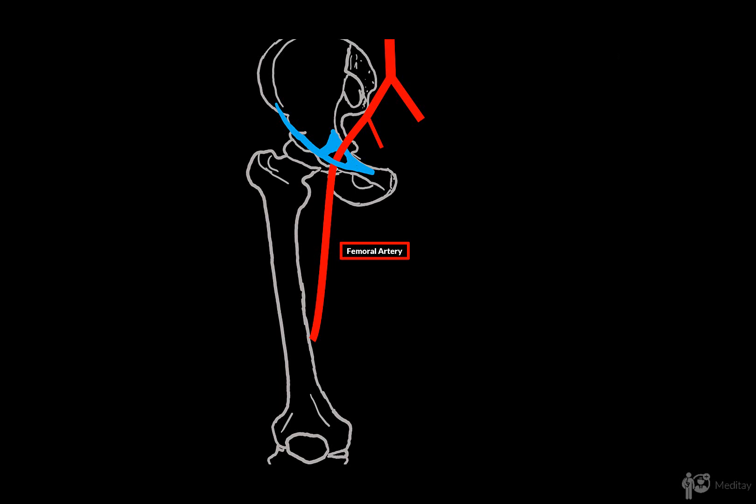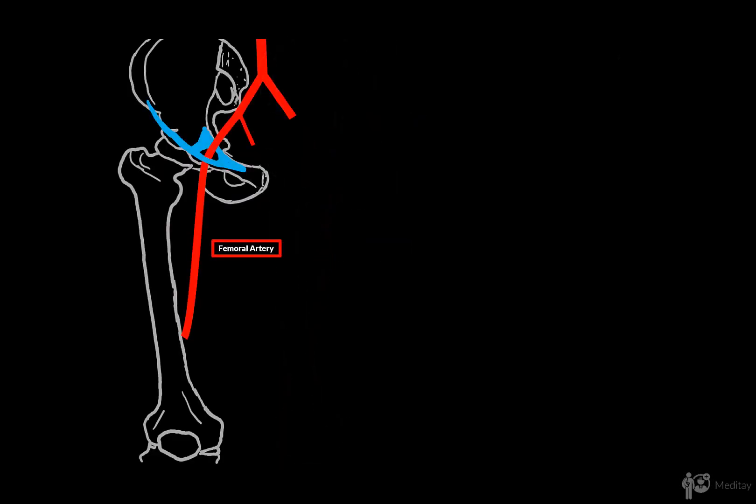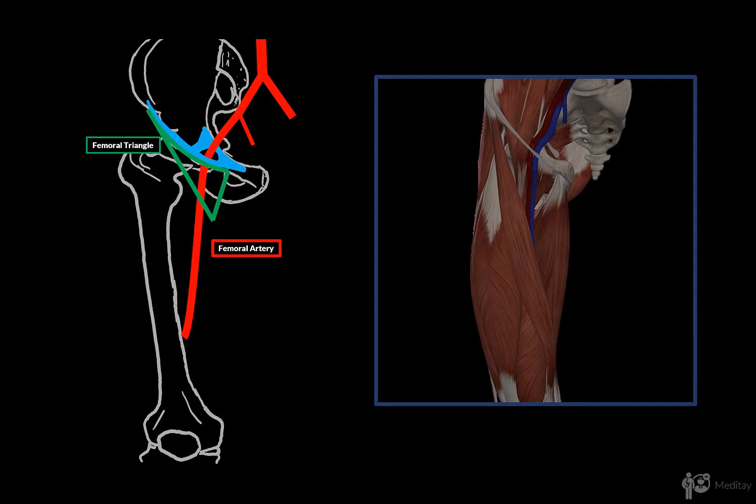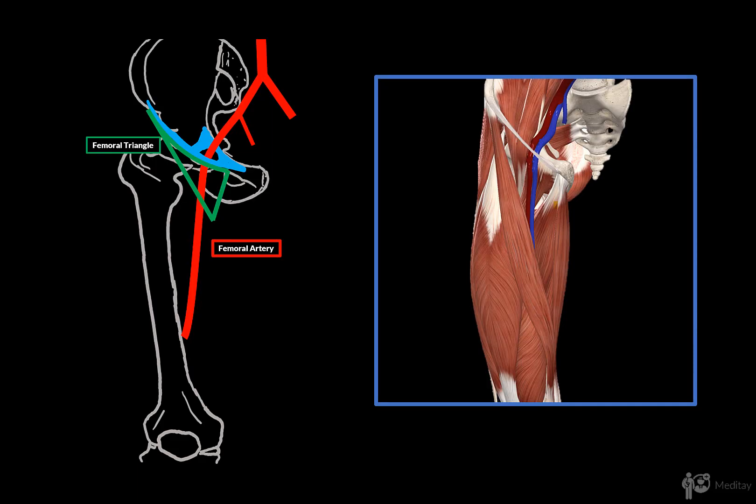As it passes the vascular space it enters the femoral triangle. Here's a better representation of it. The femoral triangle is formed by the sartorius muscle and the adductor longus, and within the canal you'll find the femoral artery passing between the pectineus and the iliopsoas muscles.